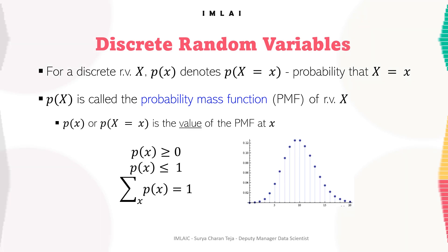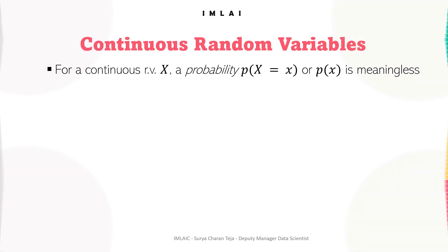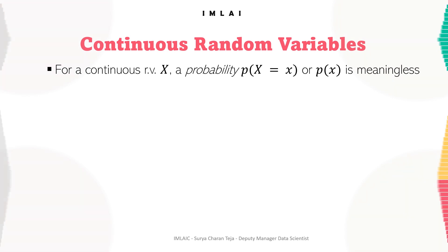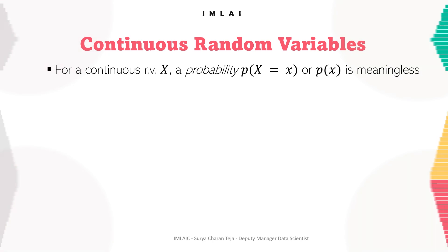Now let's look into continuous random variables. A continuous random variable is a type of random variable that can take on any value within a certain range. In other words, a continuous random variable can take on an infinite number of possible values including any value within a specific interval, and the probability of the variable taking on any particular value is 0. Instead, the probability is determined based on the probability density function of the variable.